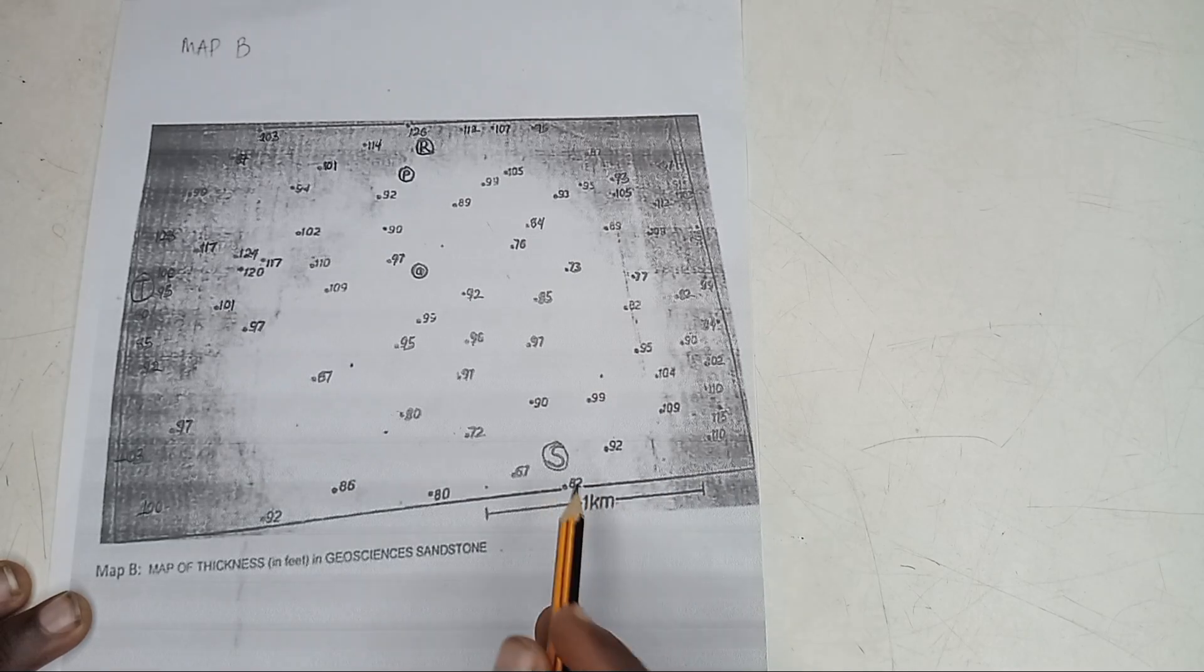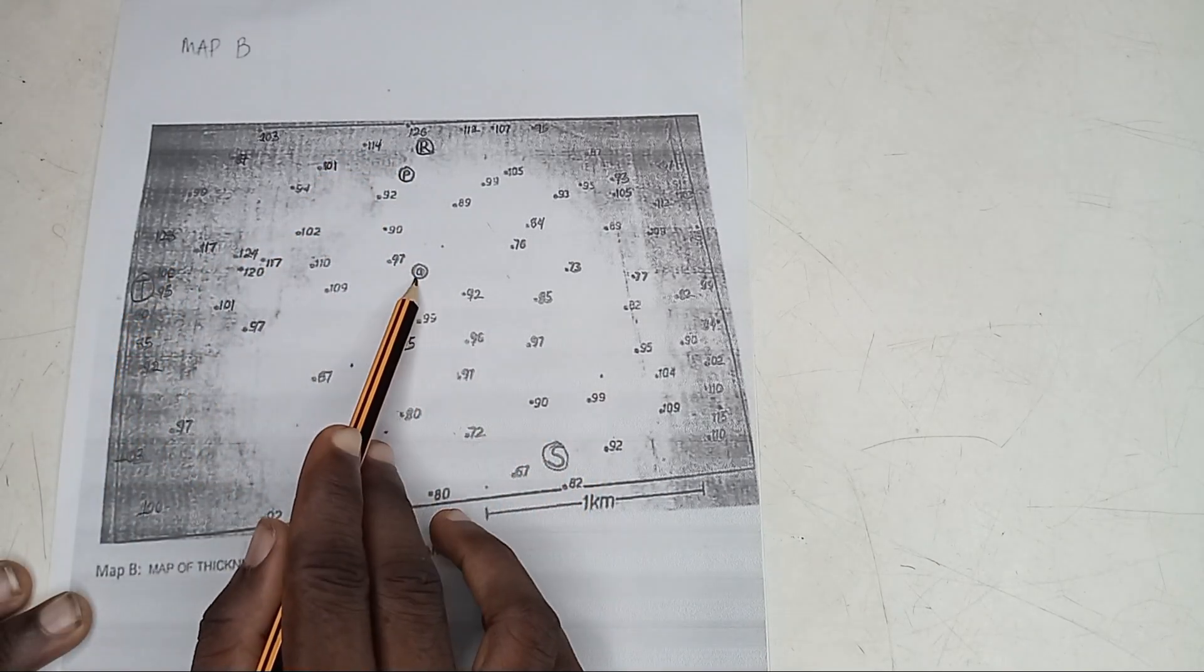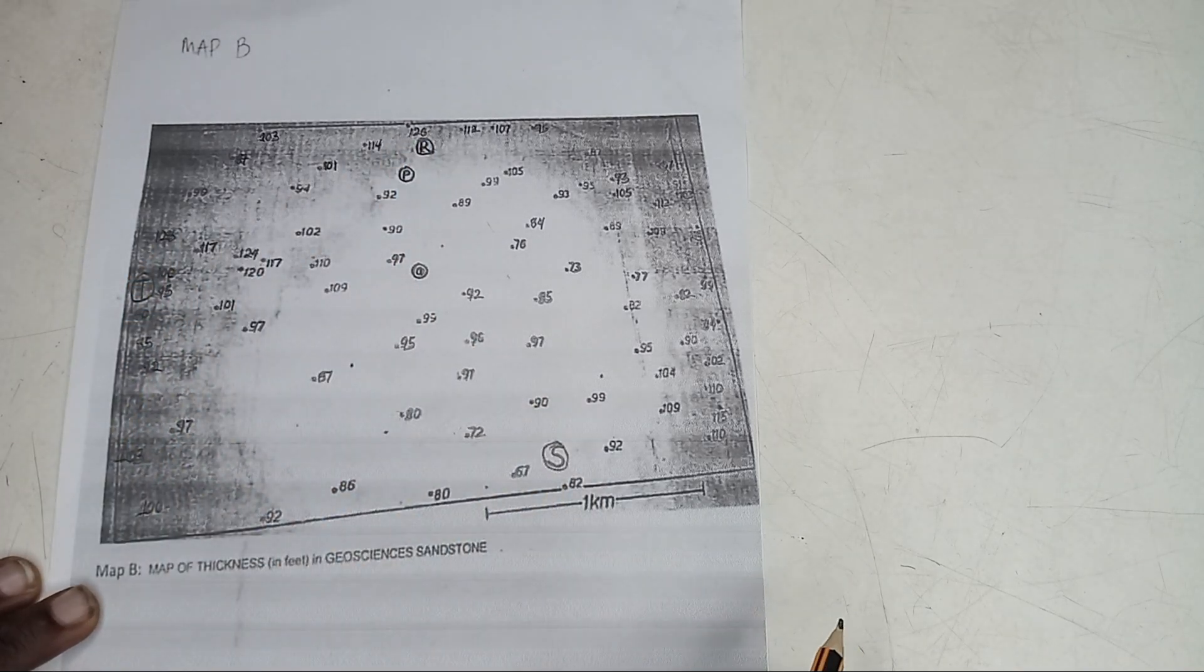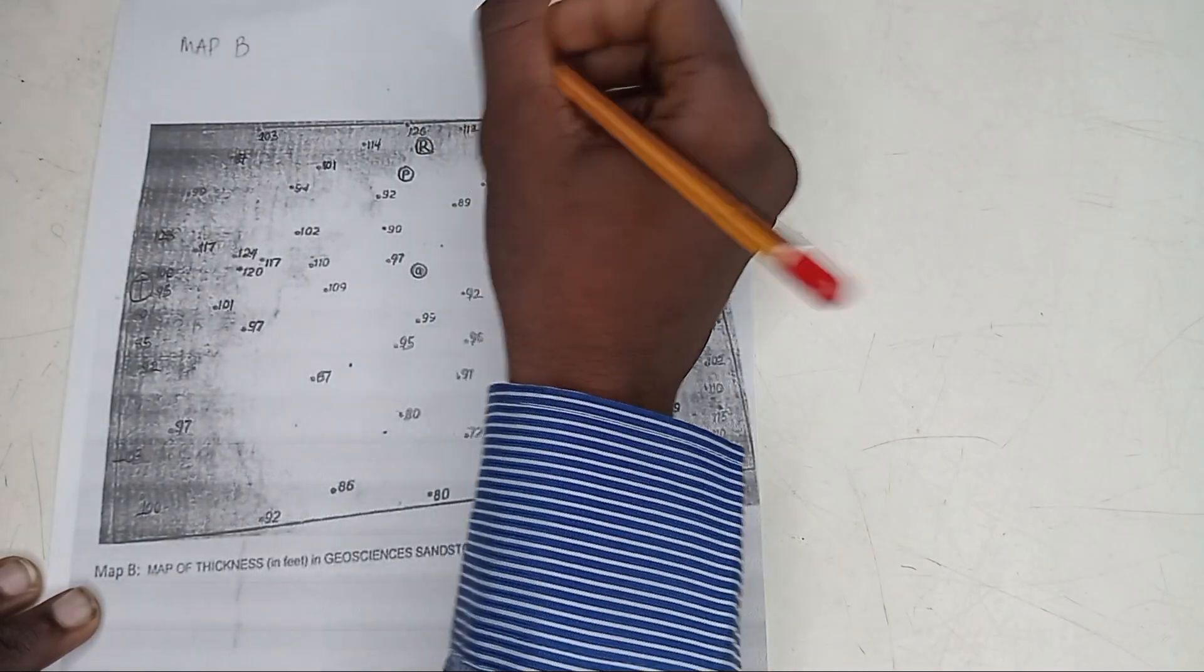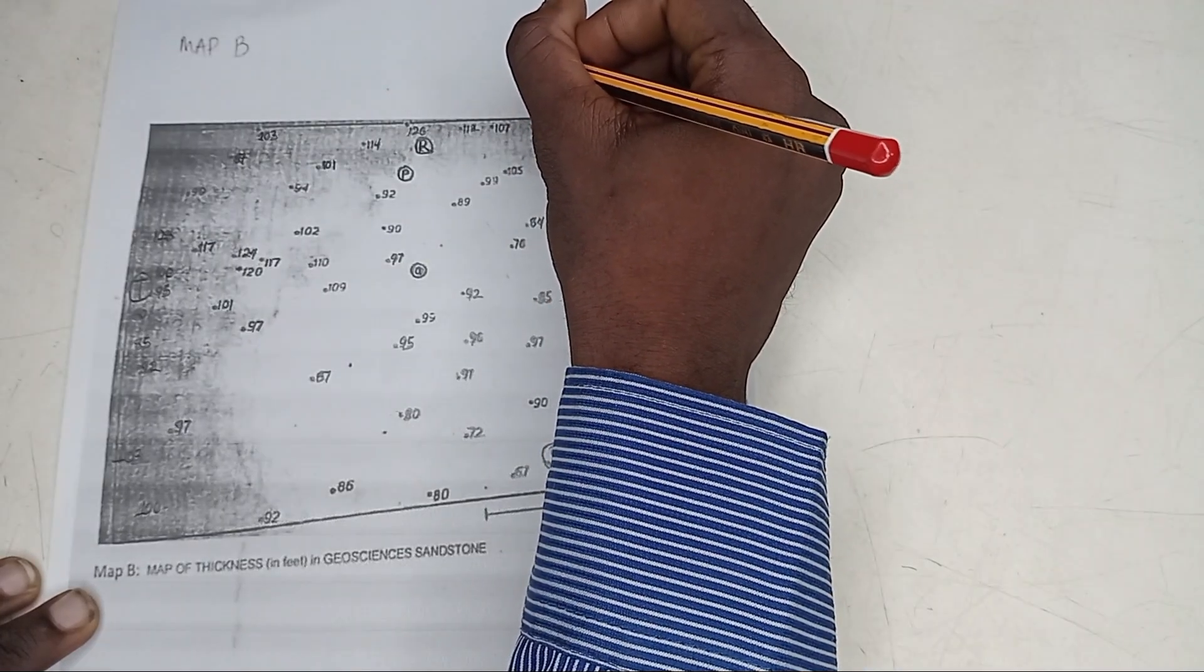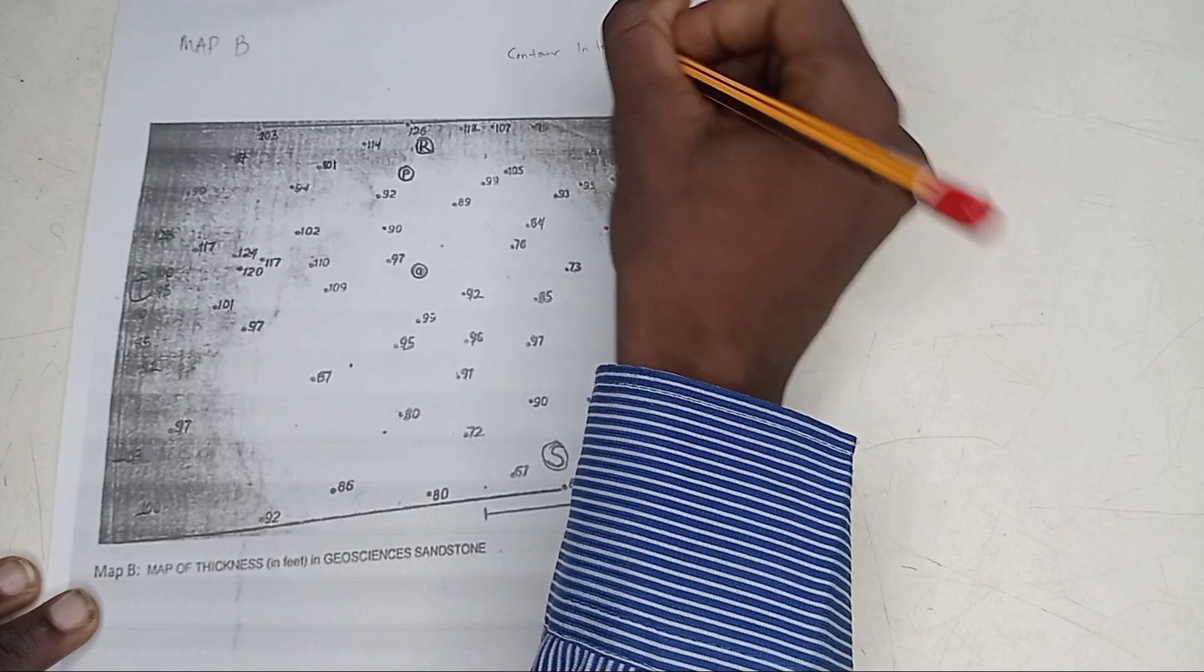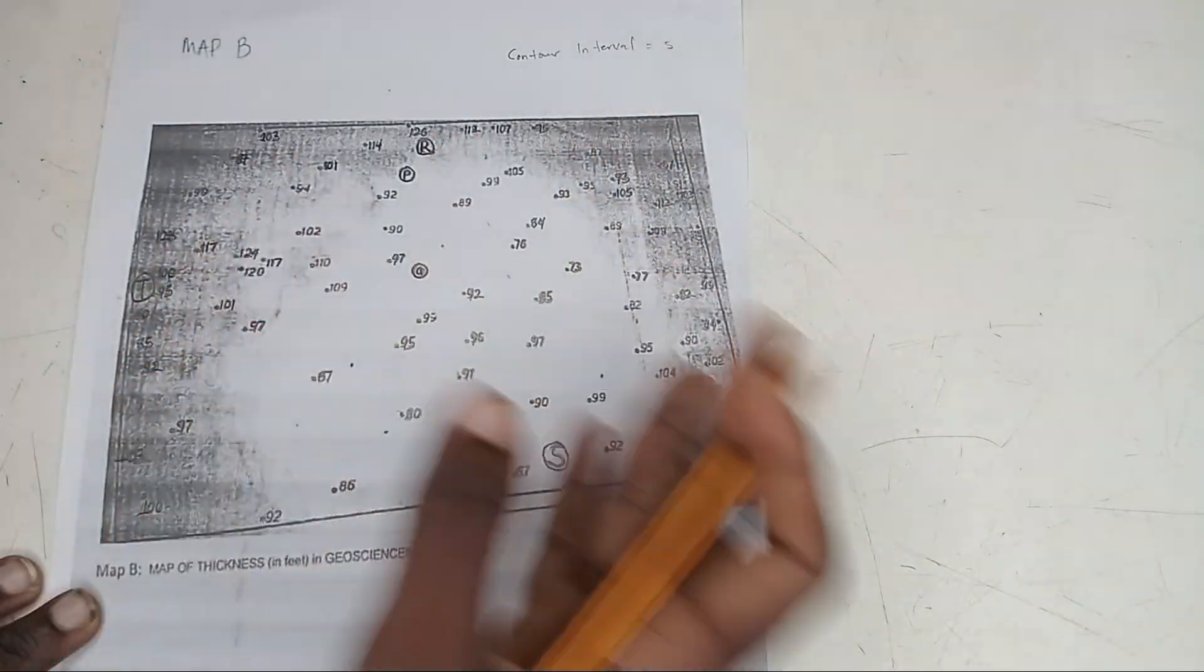So we have wells named P, Q, R, S, and T. For you to contour this map, you must choose the contour interval. Always write it in your exam. I'm going to choose a contour interval of 5 feet. My contour interval is 5, your own can be 10. Based on what you have here, let me start with 5.